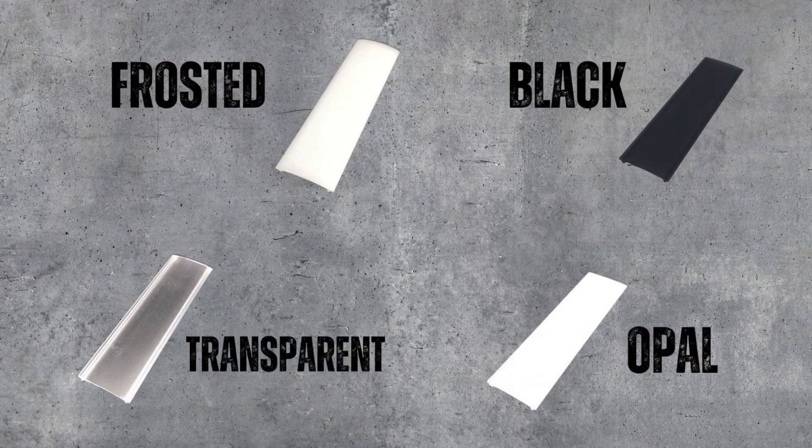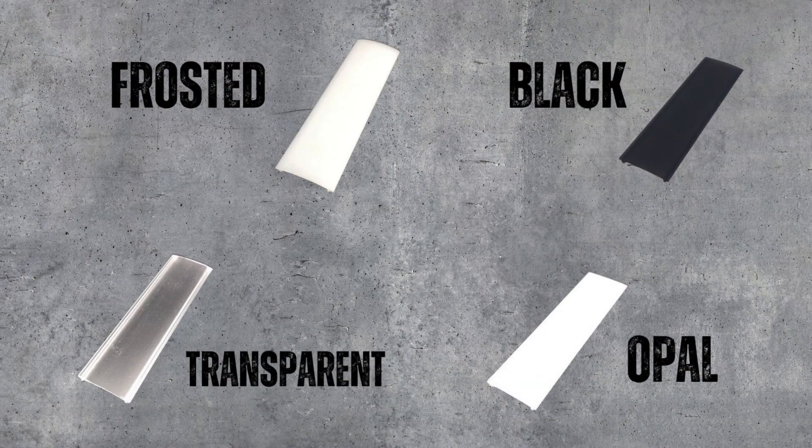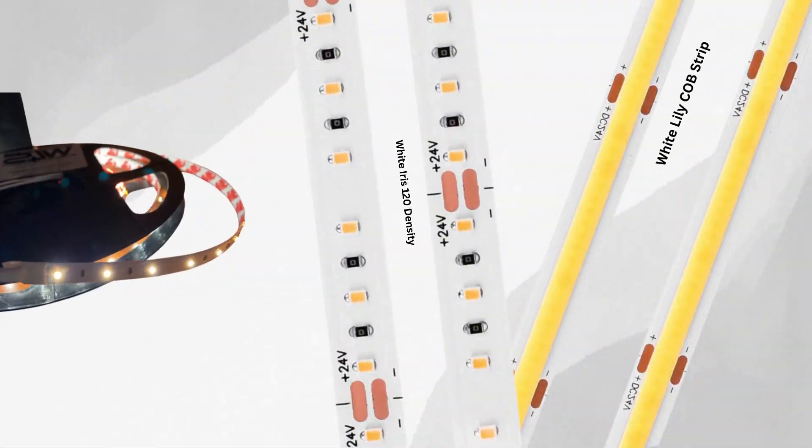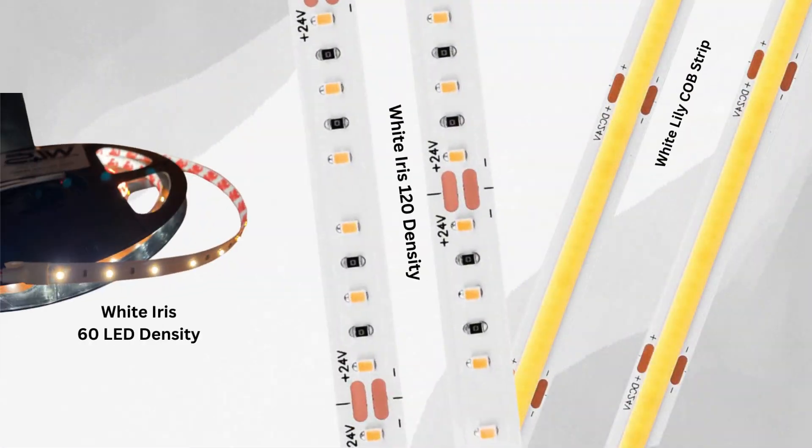The 4 diffuser styles are known as transparent, frosted, opal, and black. We'll be testing them over 3 different LED strips: the white iris series 60 density and 120 density, as well as the white lily series COB strip.